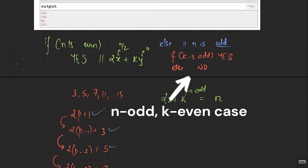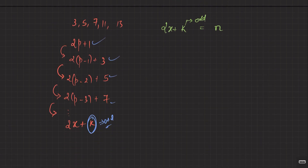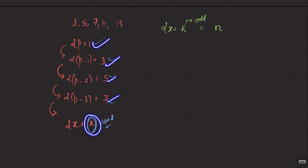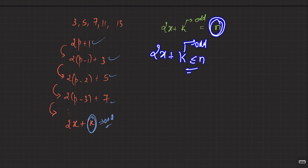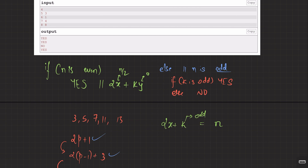To summarize: if n is even, it is always possible — with just denomination 2 you can represent all even numbers. If n is odd, we can represent it as 2x + k only if k is odd, since odd numbers take the form 2x + k where k is odd and x ≥ 0, with k ≤ n already guaranteed by the problem constraints.